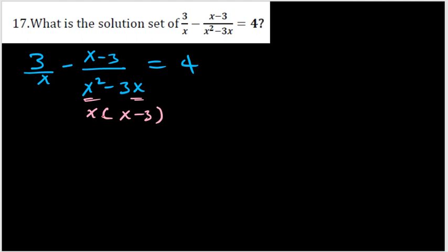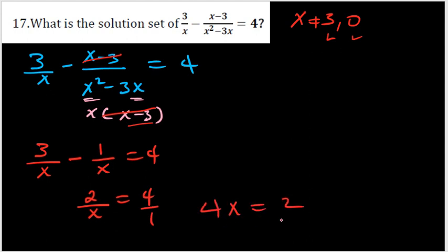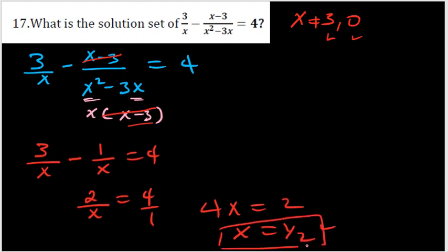As you can see, x minus 3 and x minus 3 cancel out — and x must be different from 3 and also from 0, since we cancelled x minus 3 and the domain has to be restricted. What remains is 3/x minus 1/x, which equals 4. The denominators are the same, so 3 minus 1 gives 2, meaning 2/x = 4. Cross-multiplying: 4x = 2, so x = 1/2. The solution set is {1/2}.